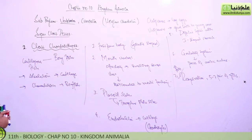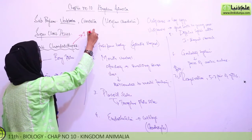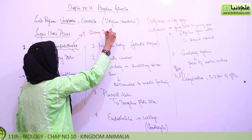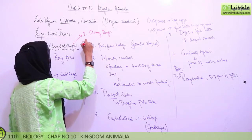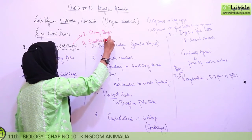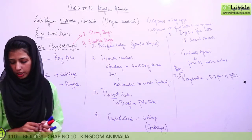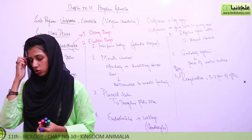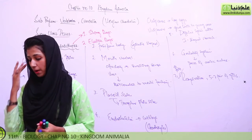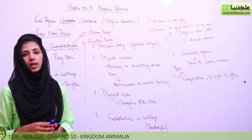Two members of this group are of special interest: the sting ray and the electric ray. In the sting ray, the tail is long and whip-like with sharp spines which can inflict dangerous wounds.